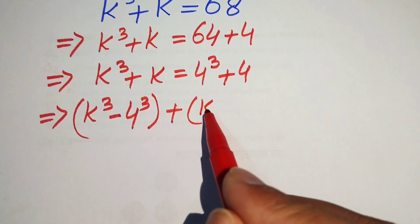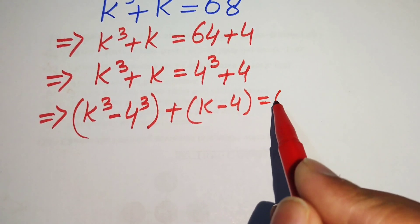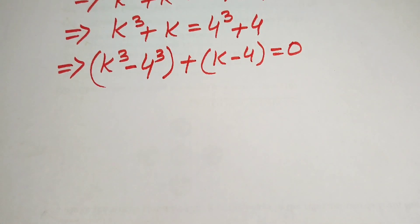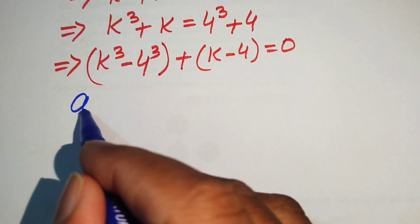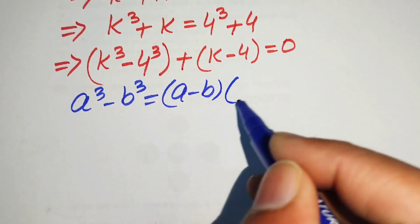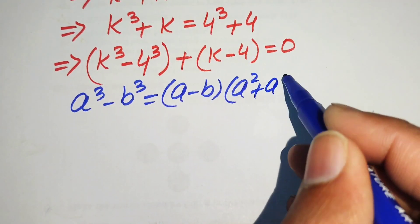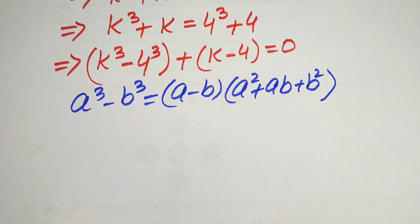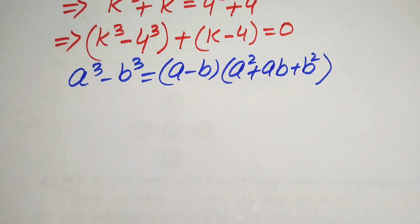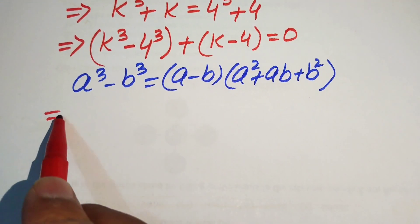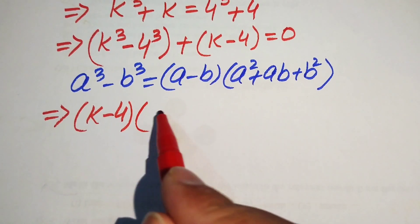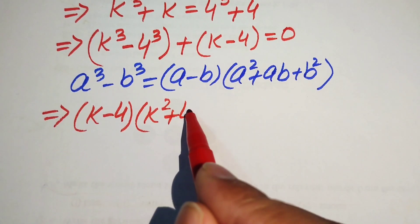Now we apply the difference of cubes formula: a cubed minus b cubed equals (a minus b)(a squared plus ab plus b squared). Applying this to k cubed minus 4 cubed, we get (k minus 4)(k squared plus 4k plus 4 squared) plus (k minus 4) equals 0.